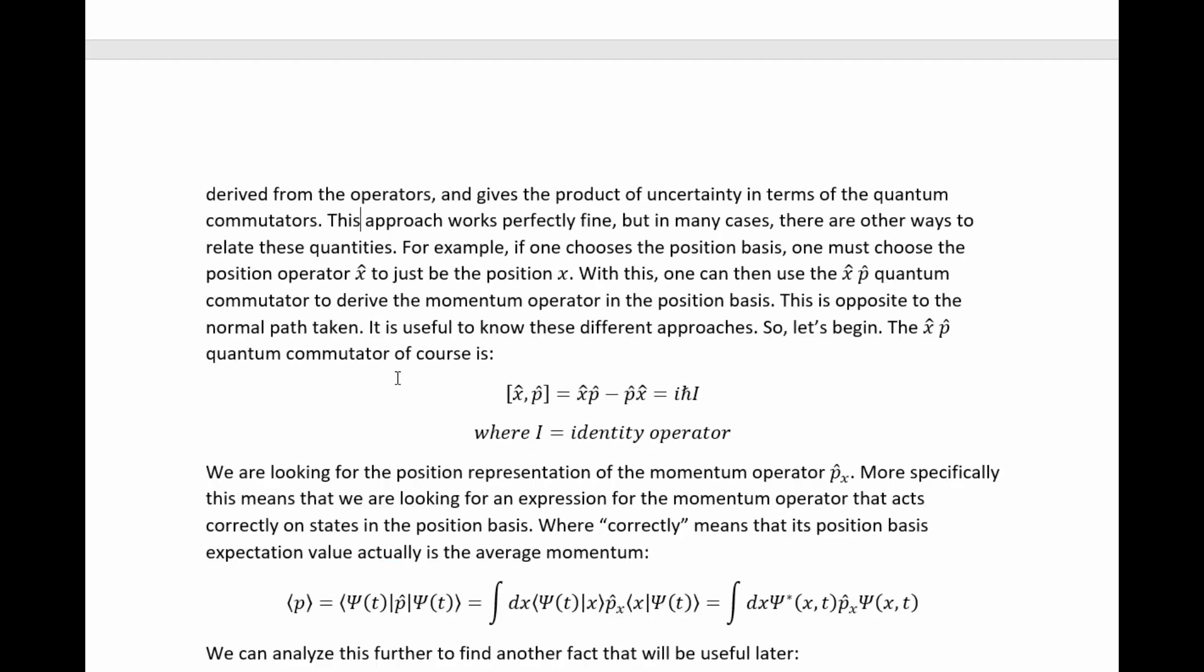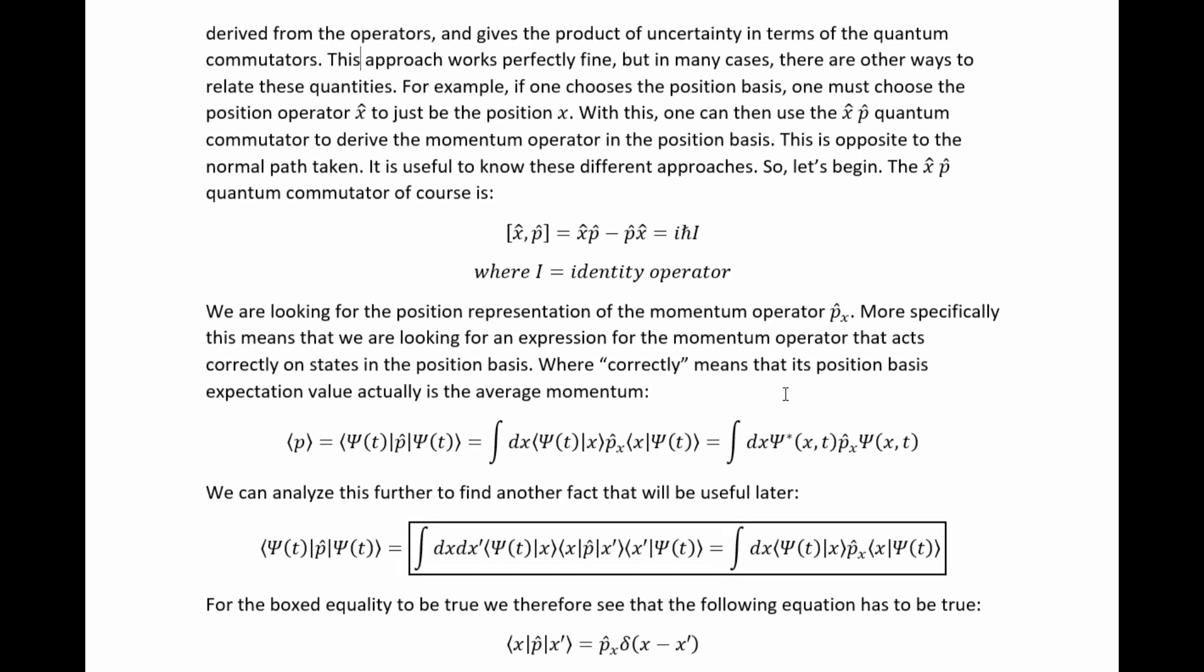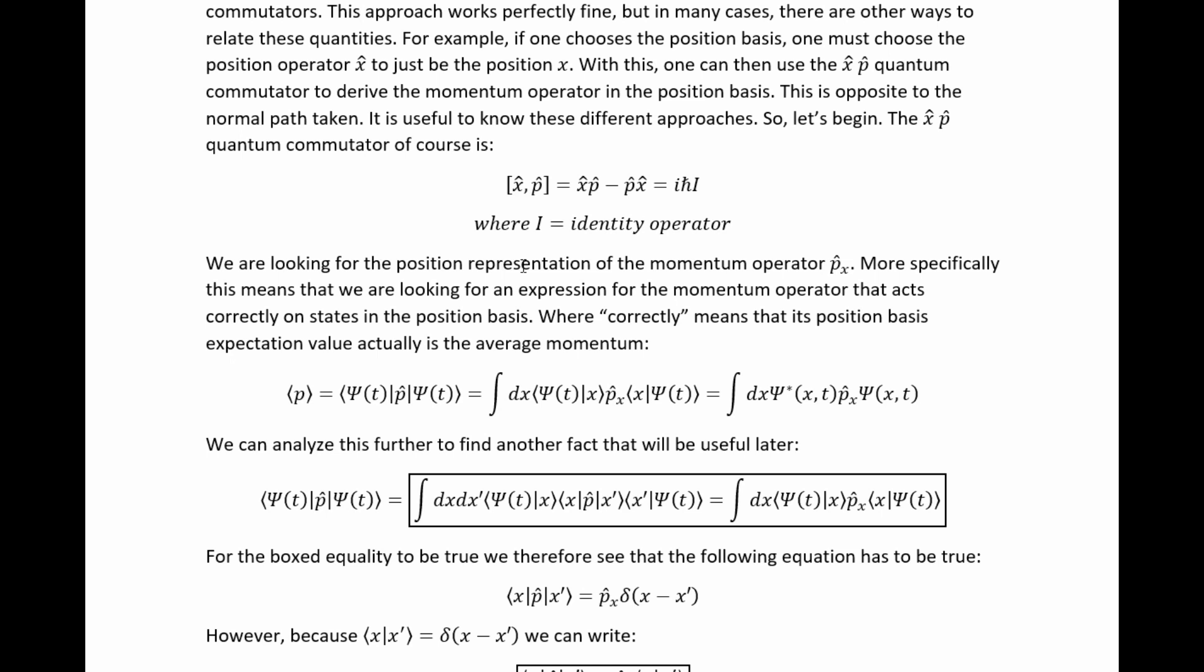The xp quantum commutator, of course, is just this, specifically ih bar times the identity. We are looking for the position representation of the momentum operator. More specifically, this means that we are looking for an expression for the momentum operator that acts correctly on states in the position basis, where correctly means that its position basis expectation value actually is the average momentum.